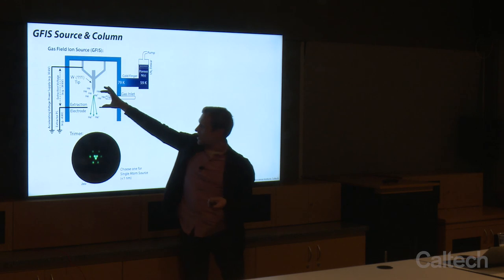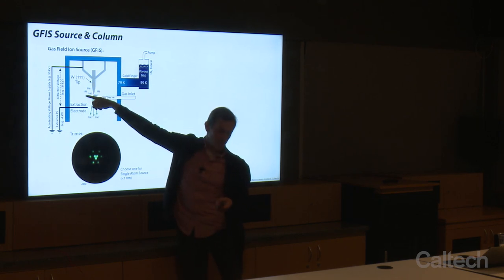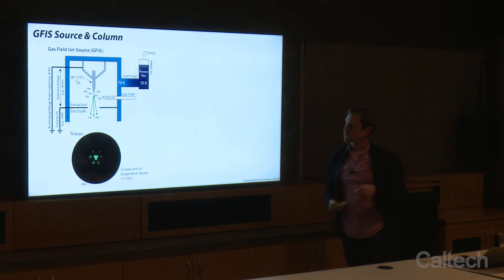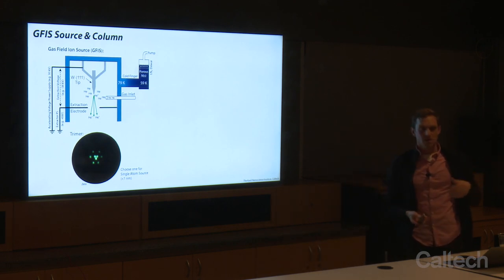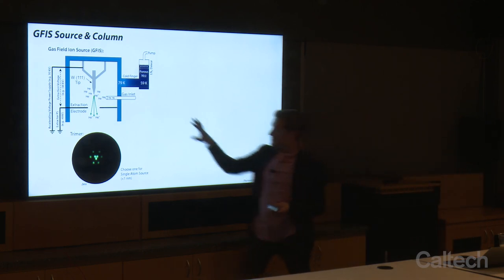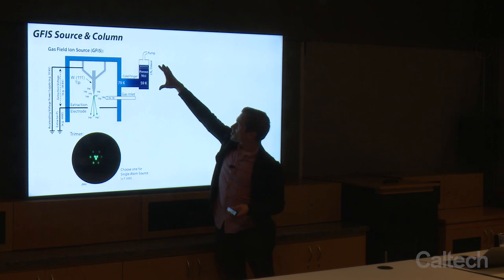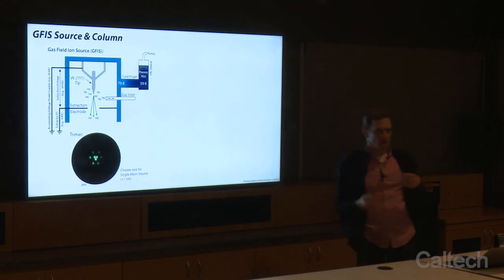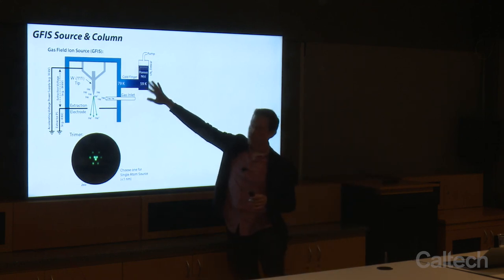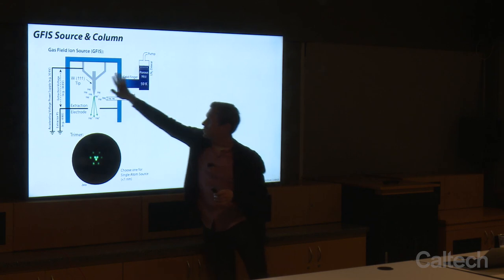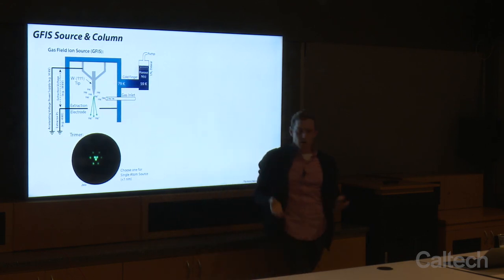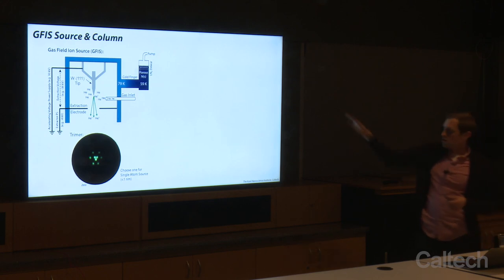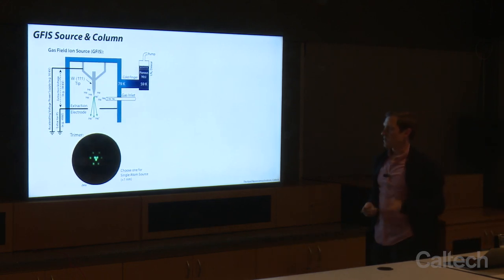We have two power supplies — accelerating voltage and an extractor. The extraction field is set by the difference between these, and the accelerating potential gives our ions their energy. If we have 30 kV on that power supply, we get 30 keV ions heading down the column. Importantly, this is all at cryogenic temperature. We have a liquid nitrogen Dewar at about 78-79 Kelvin; we pump on it and through evaporative cooling lower the temperature to about 59 Kelvin. Our source ends up at about 79 Kelvin, giving optimum ionization of the gas.